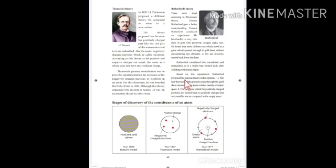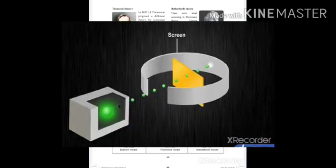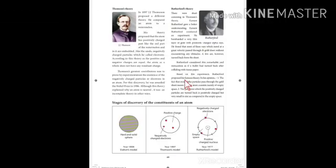From this experiment, Rutherford proposed his famous theory. The fact that most alpha particles pass through the gold sheet means that the atom consists mainly of empty space.